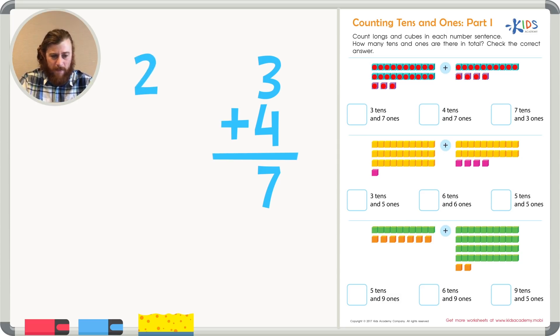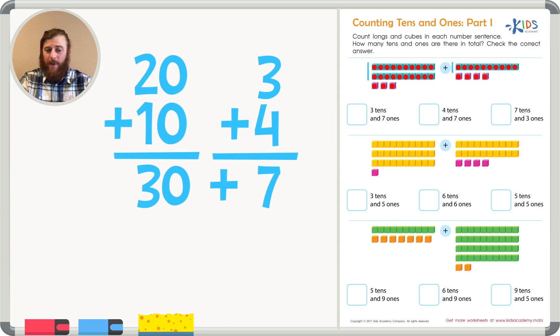And we could add twenty, represented by these two tens, plus ten, represented by this one ten, to give us a total of thirty. We could add thirty plus seven to find the total. But these answer choices aren't in regular numbers. We want to count the tens and ones in total. We already know that there are seven ones, so let's count the tens to find out how many there are.